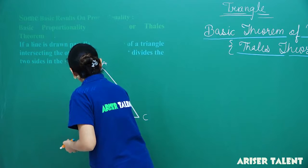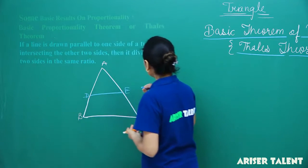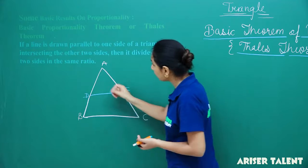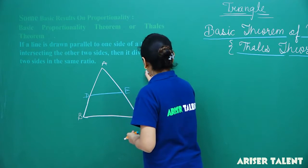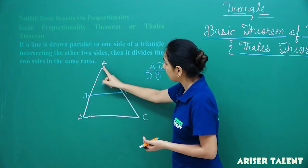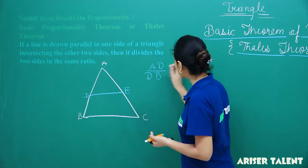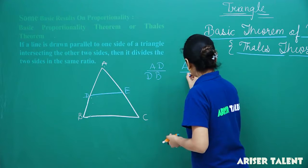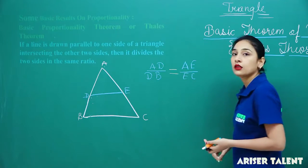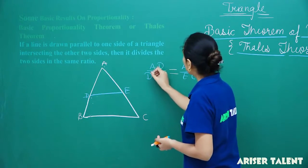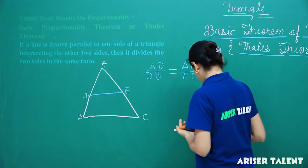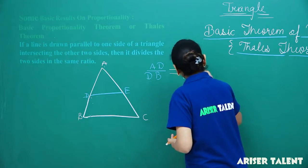We will have a parallel line intersecting the other two sides. Mark it D and E. So it is saying that it divides the two sides in the same ratio — that means AD and DB on one side, and AE and EC on the other. This theorem says that these proportions are the same, so we have to prove that AD by DB equals AE by EC. This is our Thales' theorem.